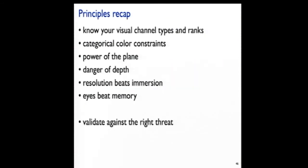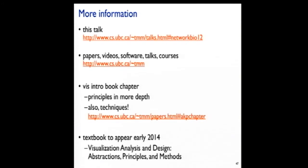To recap: I was focused on principles you can use to think about design, mostly visual encoding, a little about interaction, and also this question of validating against the right threat. There's a lot more information available — the slides for this talk are on my website, including lots of papers and my entire grad course on visualization. In this talk I only talked about principles and only alluded to some questions of techniques. That would be a whole other talk which sadly I don't have time to give today. But there is a single book chapter that goes into a lot of this in more detail, and in about a year there will finally be a textbook coming out. Thank you.